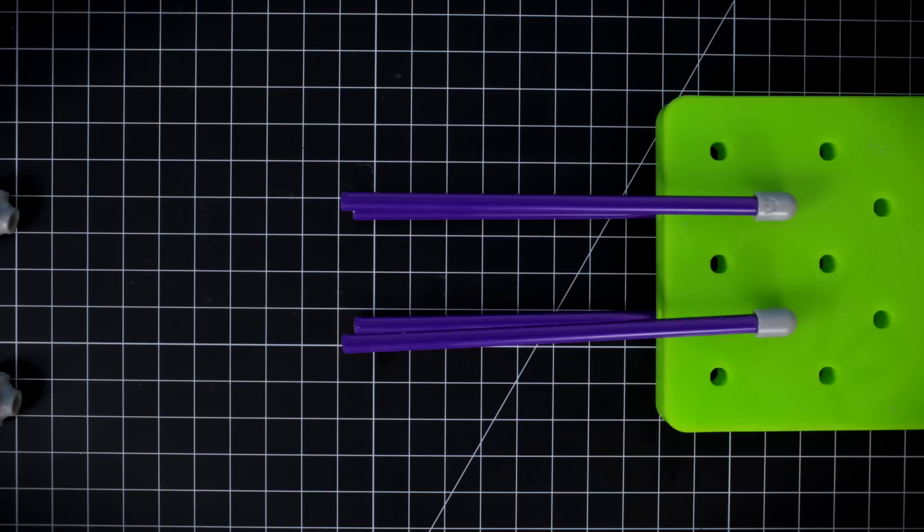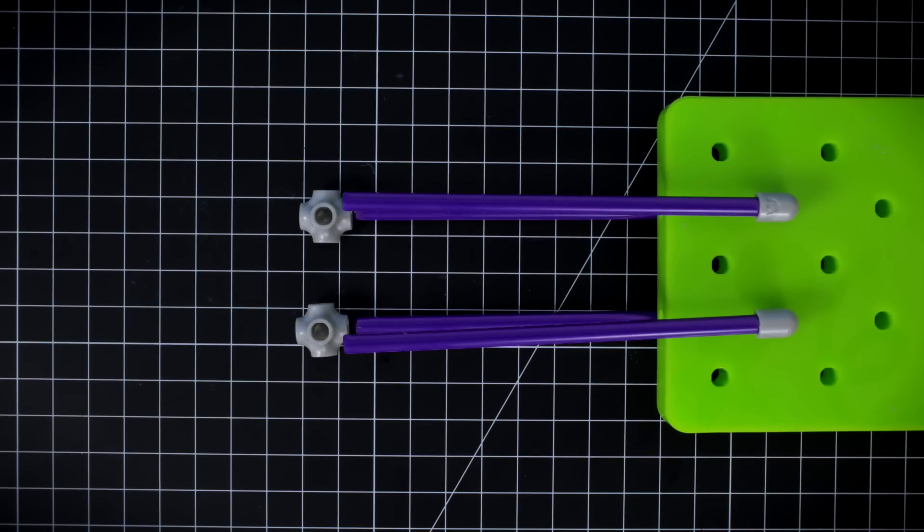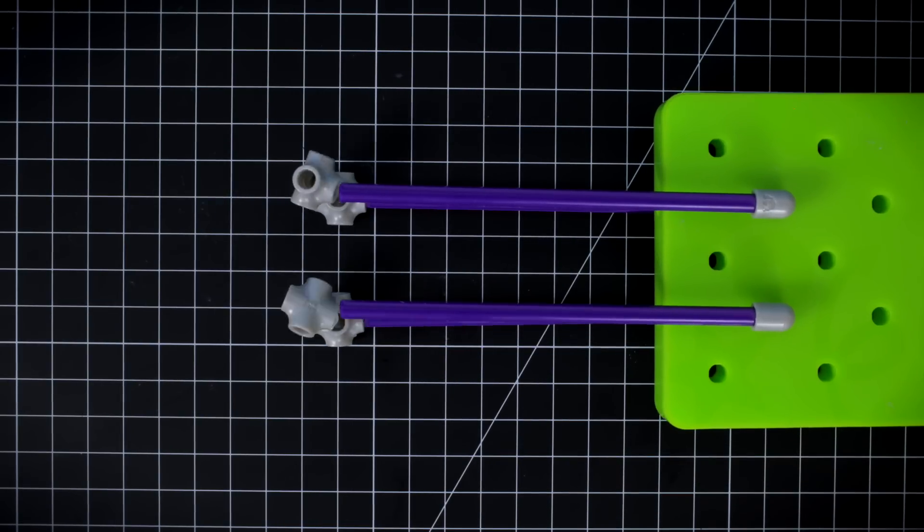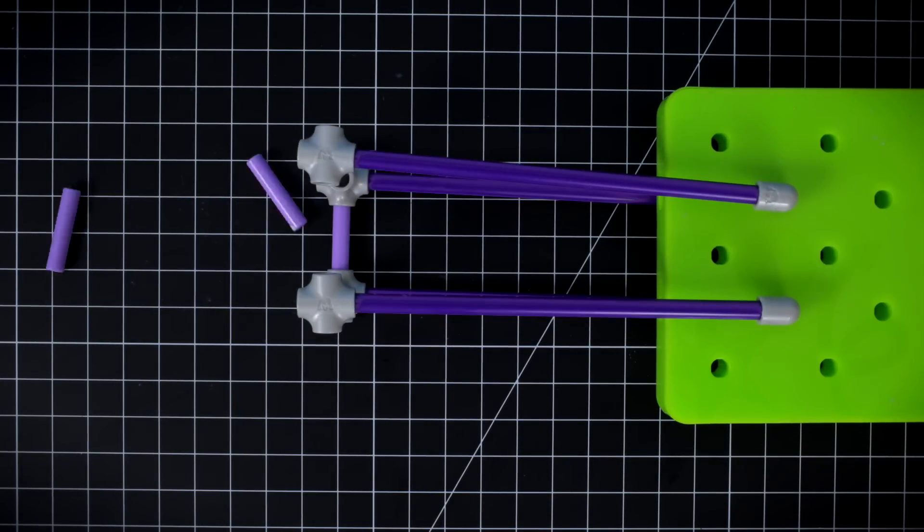Step two. Add all of the five-way joints to the ends of the axles. Use your four mini axles to connect them all.